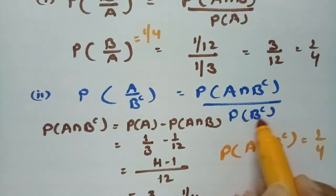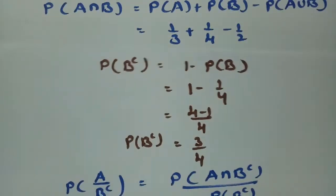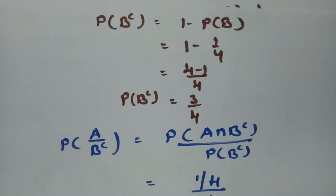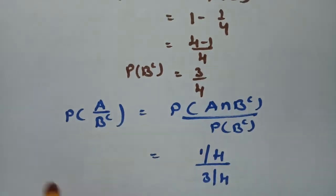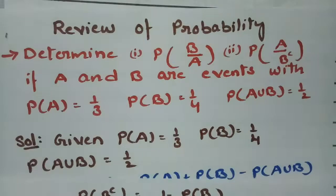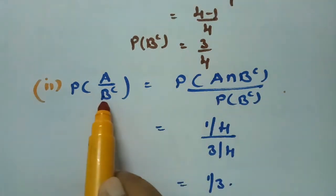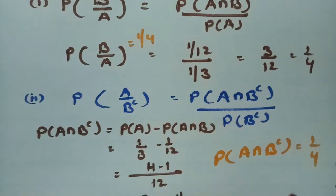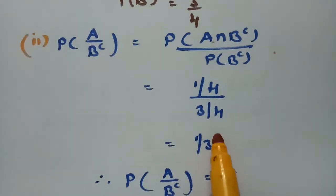Now we need P(B'). P(B') = 1 − P(B) = 1 − 1/4 = 3/4. Substituting into the conditional probability formula: P(A|B') = P(A∩B') / P(B') = (1/4) / (3/4) = 1/3. Therefore, P(A|B') = 1/3.